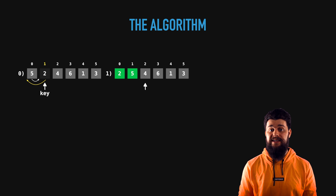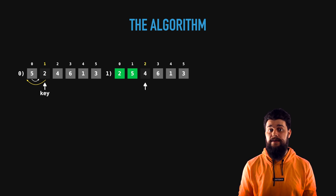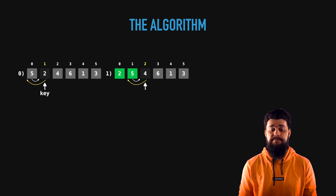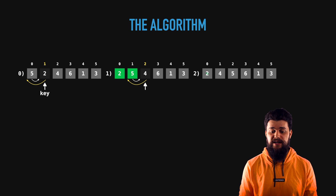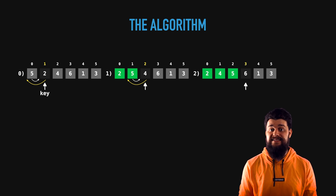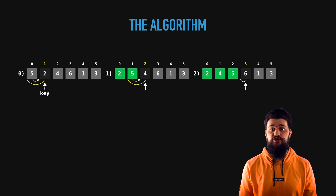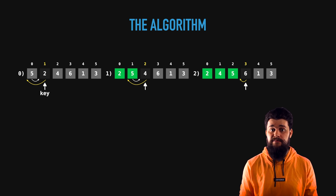Following the same rules, we pick up the next key — in this case it's going to be four — and do exactly the same thing: position each element into its correct position. We position four between two and five, because that's its correct position. Again, all elements on the left side are sorted — we have two, then four, then five — and then we have the next key, which is six at index number three. We pick up that key and try to position it into its correct position, and its correct position is already there, so we leave it as it is.